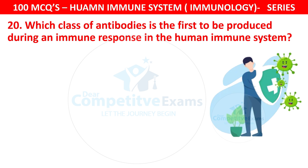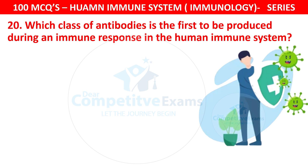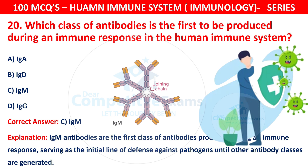Question 20. Which class of antibodies is the first to be produced during an immune response in the human immune system? Your options are IgA, IgD, IgM, or IgG. The correct answer is C — IgM. IgM antibodies are the first class of antibodies produced during an immune response, serving as the initial line of defense against pathogens until other antibody classes are generated.